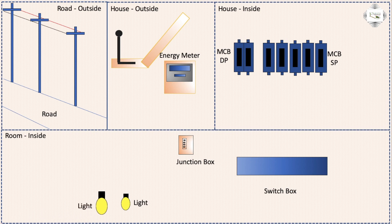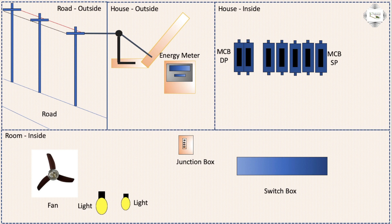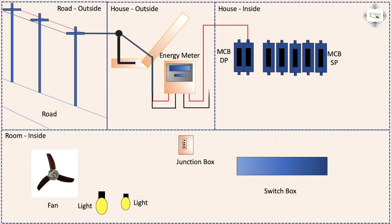From electric pole, house inside energy meter — energy meter outside. Negative and positive connection: energy meter input positive or negative connection. Energy meter outgoing phase line to DP circuit breaker input phase line and neutral input — DP connection.